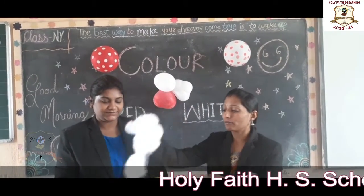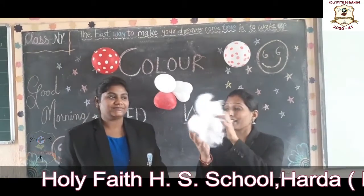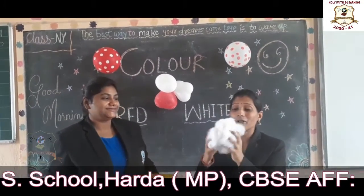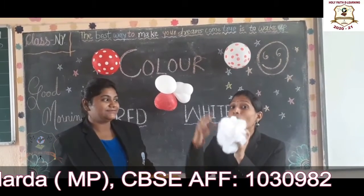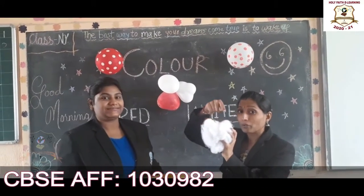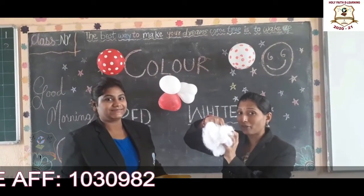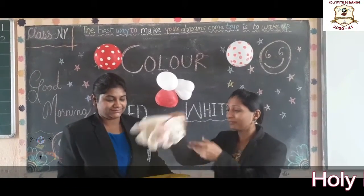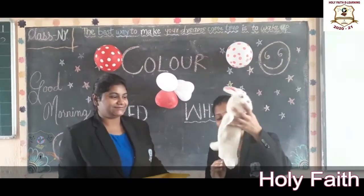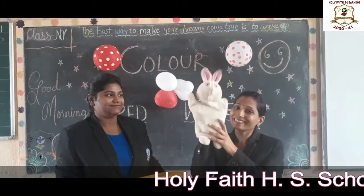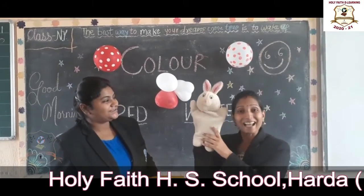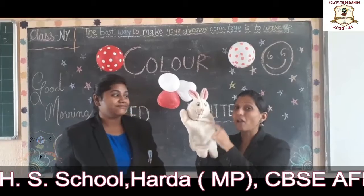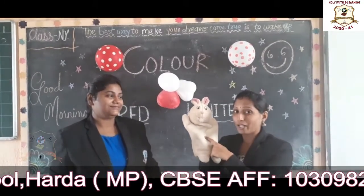Now look, what is this? Cotton. What is the color of this cotton? White. What is the color of this water? White. Okay, now next — what is this? Rabbit. What is the color of this rabbit? White.